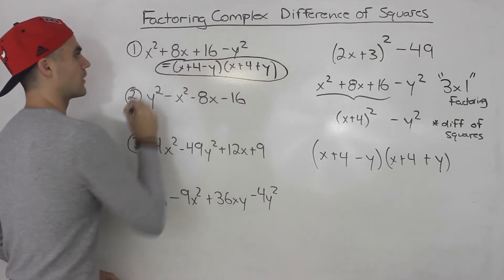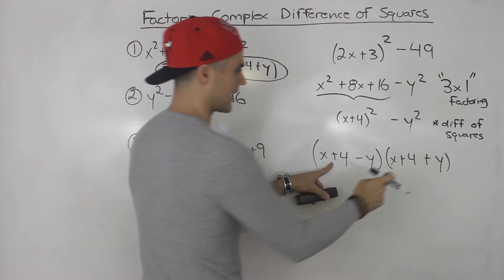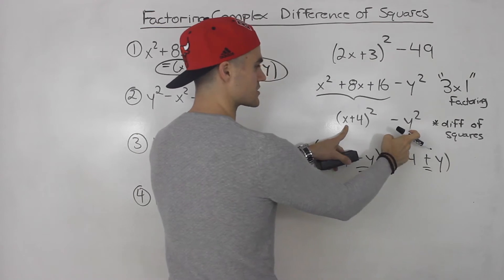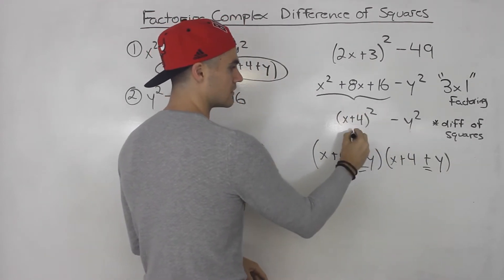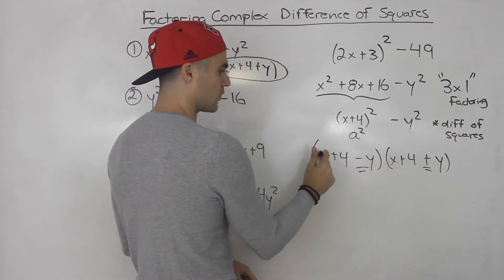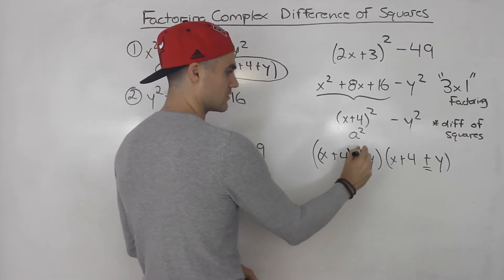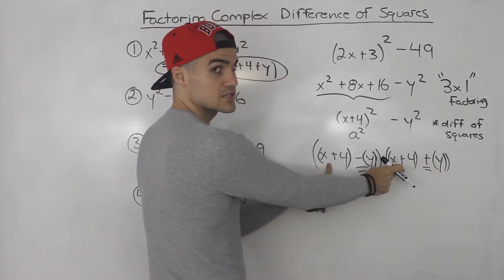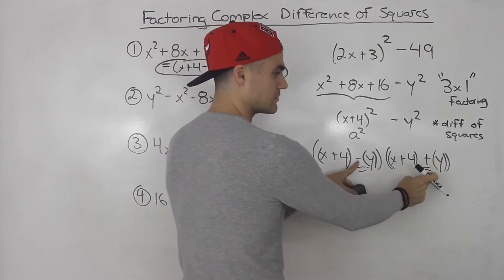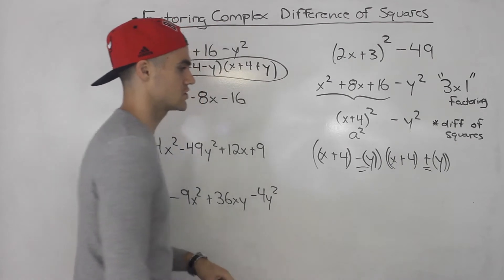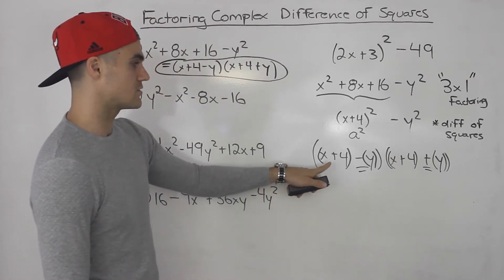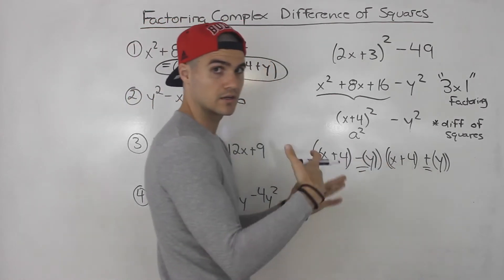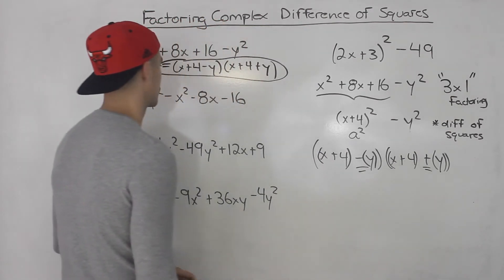One more thing I want to note: the sign inside x plus 4 didn't change — only the sign in between the two expressions changes. Because this whole thing is like a squared, x plus 4 is the a value and y is b. That expression always stays the same; it's always the sign in between the two expressions that changes. Sometimes students change the sign inside the expression, but it's always the sign in between the two expressions that changes.